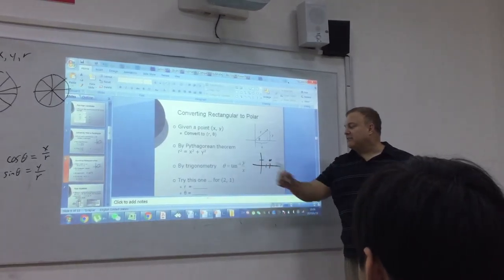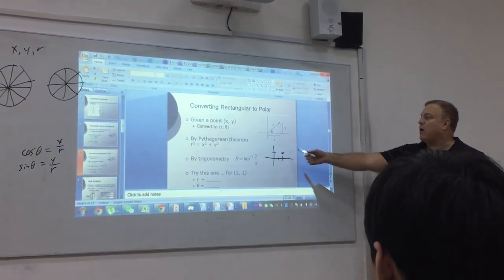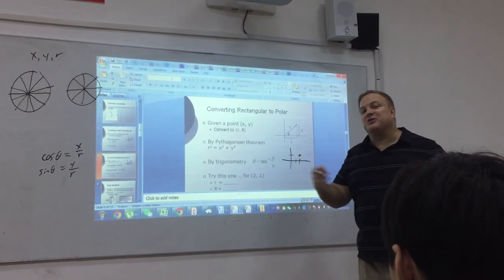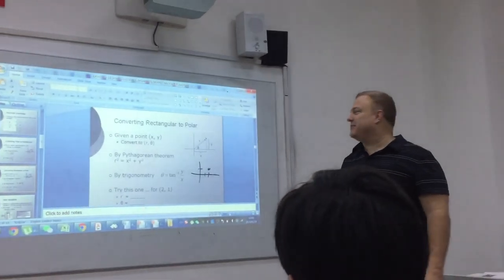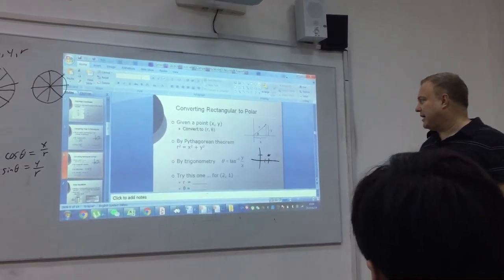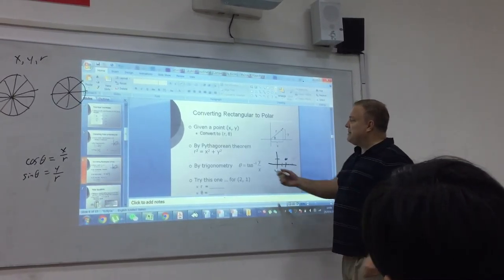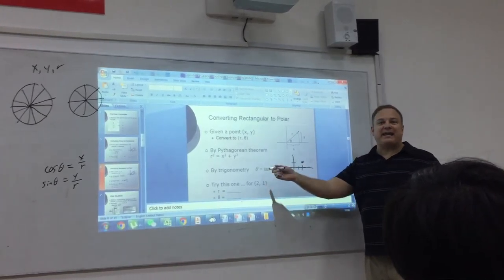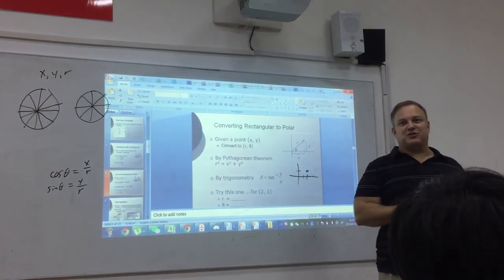You know that if we take the inverse tangent and the x and y are both positive, the calculator is already going to give you an angle in the first quadrant, right? You should know that. Can anybody remind me, what is the range of the inverse tangent function?